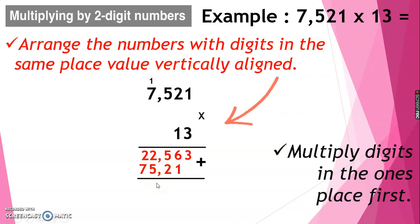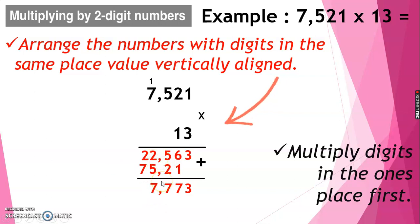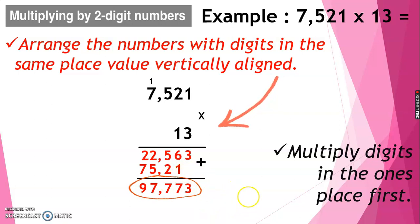Then lastly, we're going to add: 3; 6 plus 1 is 7; 5 plus 2 is 7; 2 plus 5 is 7; and 2 plus 7 is equal to 9. So therefore, the answer is 97,773.